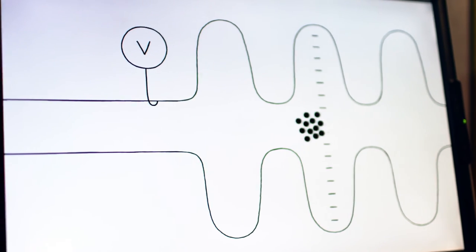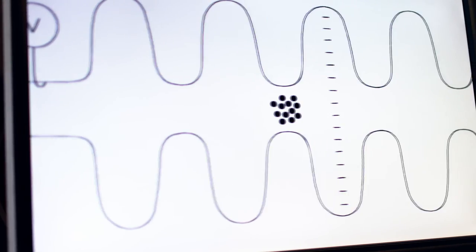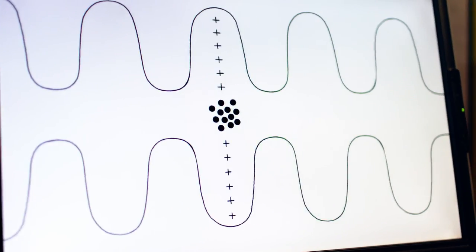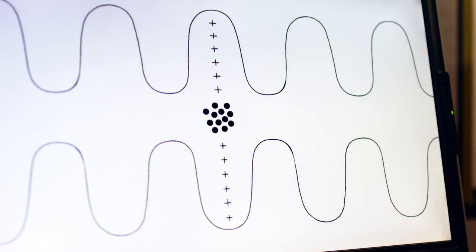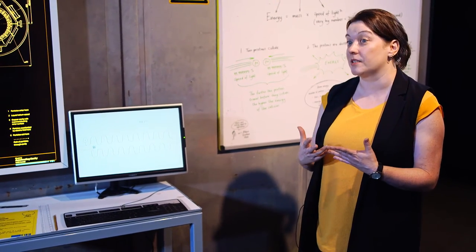This will happen 11,000 times a second as the particles go through that bit of the ring, and they'll get a kick each time they go. By the time they have accelerated to full LHC speeds, they're going at 99.9999991% the speed of light.